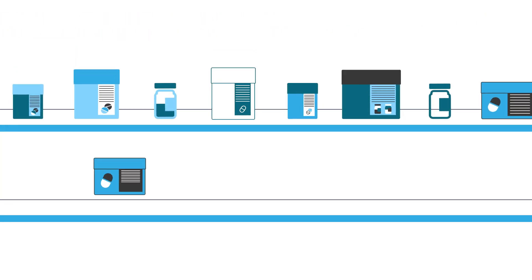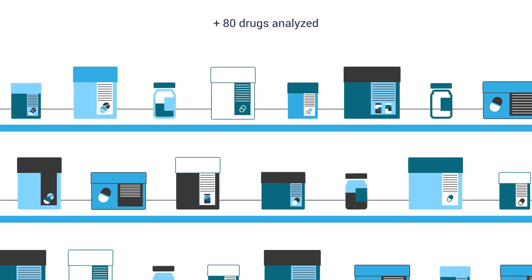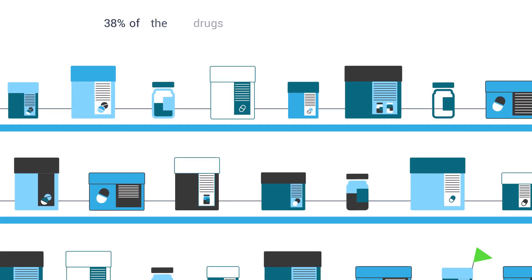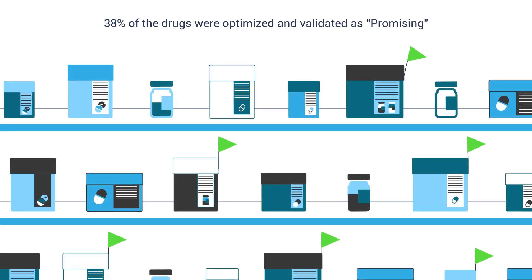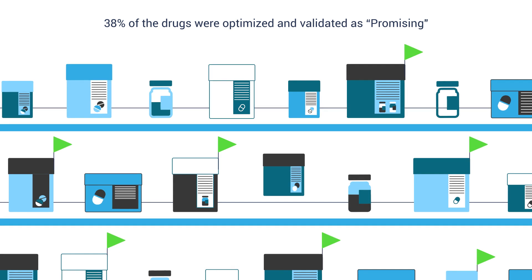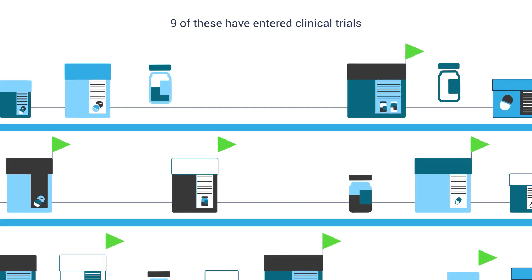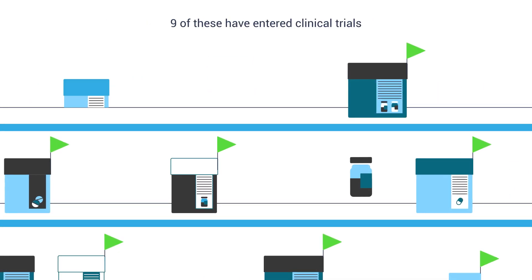Atana has analyzed more than 80 drug candidates for pharmaceutical companies around the world. 38% of these were validated and optimized by Atana in preparation for clinical trials. Of these candidates, 9 have to date received funding and entered clinical trials.